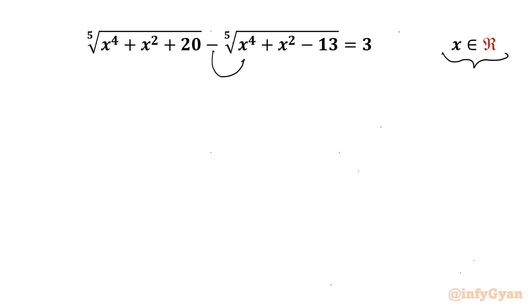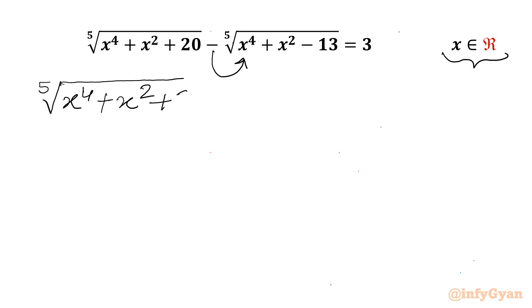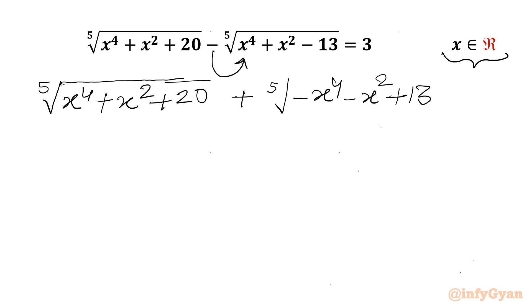I will take this minus into this radical. So I can write the equation as: fifth root of (x⁴ + x² + 20) plus fifth root of (−x⁴ − x² + 13) equal to 3.